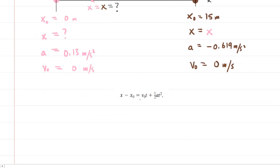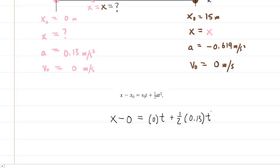Using all this information, we recall an equation from one-dimensional kinematics and plug in the given information for each object. Starting with the girl: x minus her initial x coordinate of 0 equals her initial velocity of 0 times time plus one-half multiplied by her acceleration times time squared. We omit units for clarity.